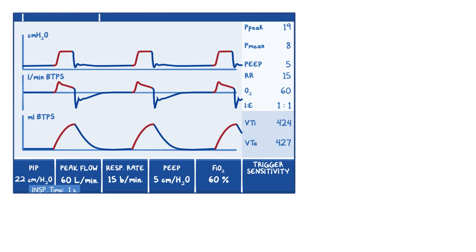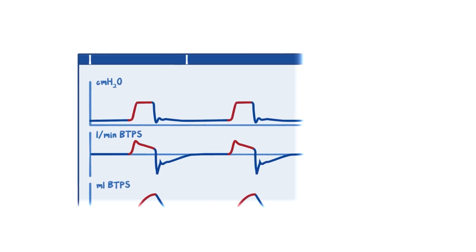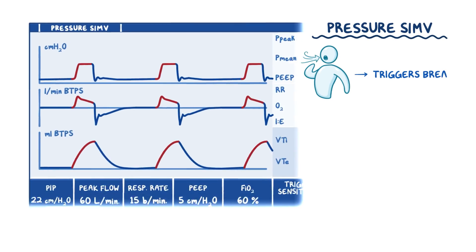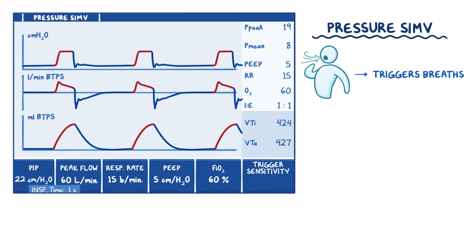So just like we were able to program the ventilator to support natural breaths in volume modes of ventilation, with pressure-synchronized intermittent mechanical ventilation, or pressure SIMV, our patient can also trigger breaths. In pressure SIMV, we'll set all the same parameters: the peak flow, the respiratory rate, the inspiration time, the PIP, and the FiO2. Except instead of volume, we're going to set our peak inspiratory pressure with that added setting of trigger sensitivity.